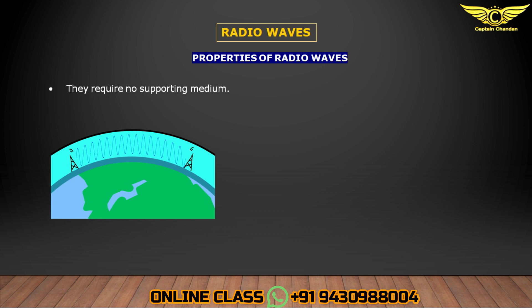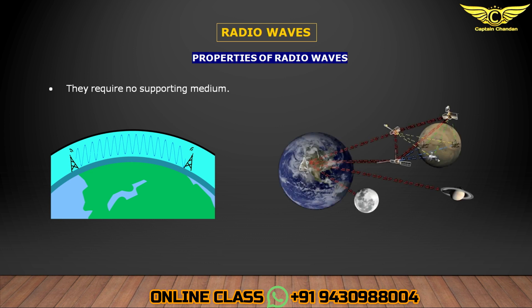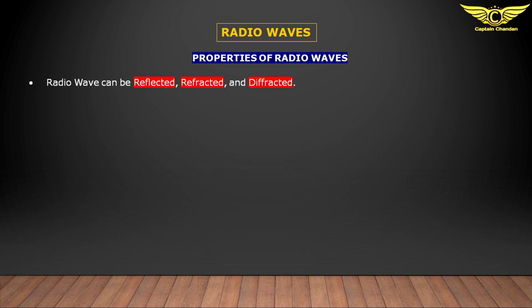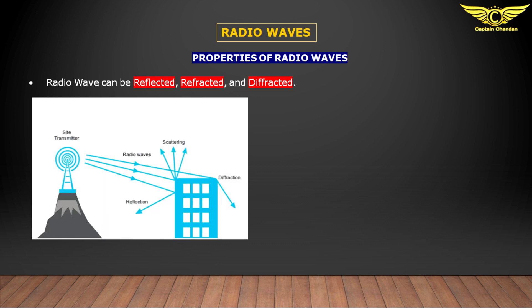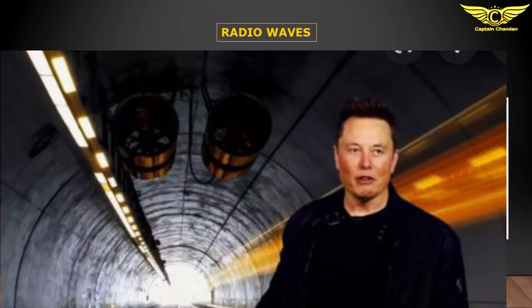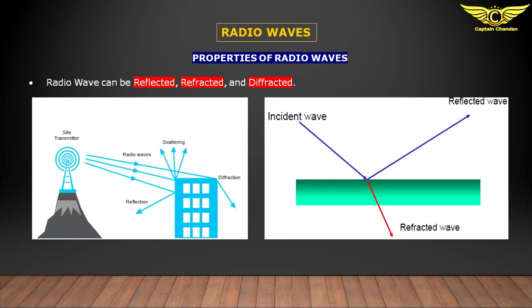Radio waves require no supporting medium. This means electromagnetic waves can travel not only through air and solid material but also through the vacuum of space. Radio waves can be reflected — a reflected wave is called an echo. For example, if you shout in a tunnel you might hear your voice coming back to you — this is an echo.